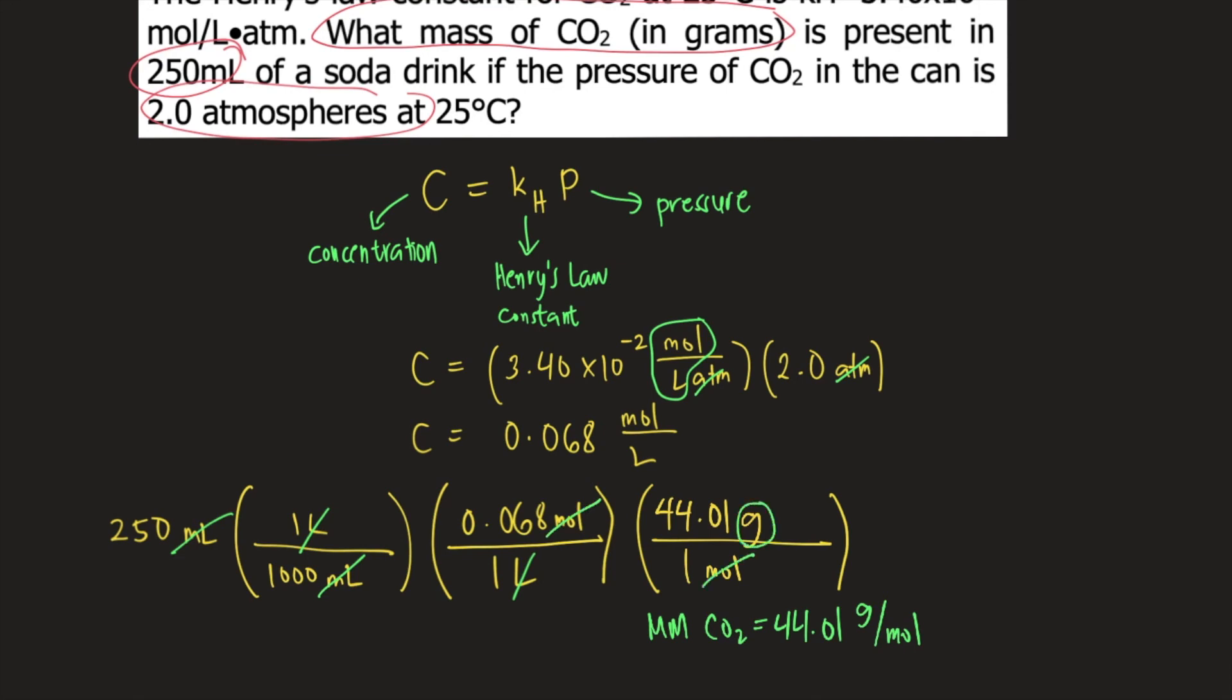Now you have grams as the final unit. If you solve everything in your calculator, this is equal to 0.748 grams of CO2. And this is the final answer to the question.